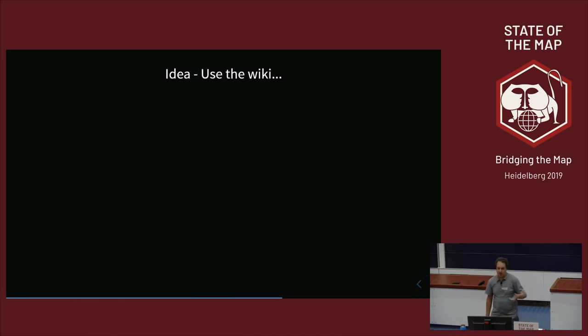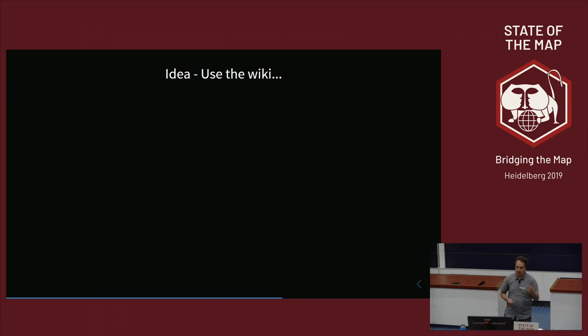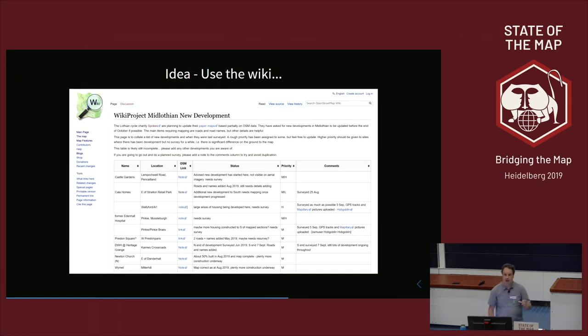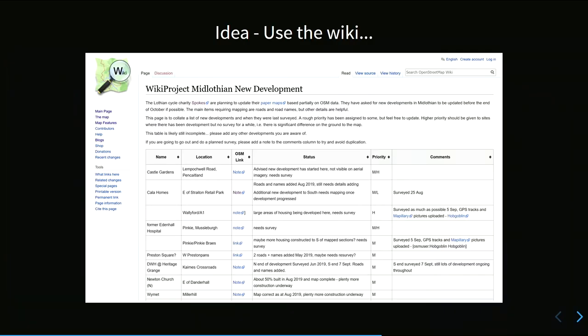We've also had the idea of using the wiki. There are a lot of new developments, and there's a brilliant cycling map that was printed on paper by local cycle campaigners. The person now updating it has started coming to our pub meetings and wants to use OpenStreetMap data. We created a list on the wiki pointing to relevant notes — another way of organizing sub-projects. It's useful, but only a few people know about it.